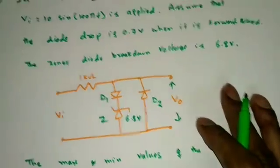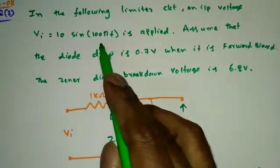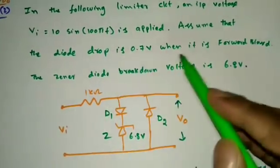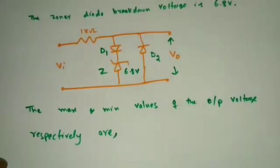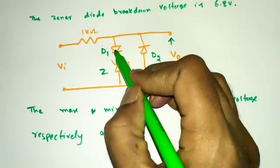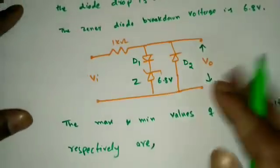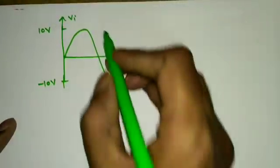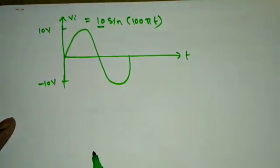Question 2 is from GATE 2008: a limiter circuit with input Va = 10 sin(100πt). The diode drop is 0.7 V when forward biased; the Zener diode breakdown voltage is 6.8 V. We must find Vo_max and Vo_min. The circuit has two normal diodes and one Zener diode. When a diode is on, replace it with 0.7 V; when the Zener breaks down, replace it with 6.8 V.